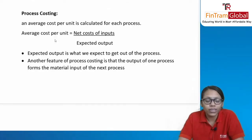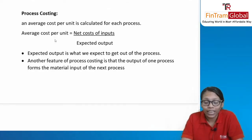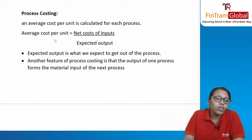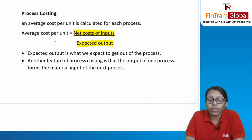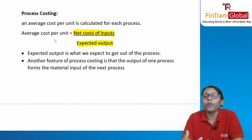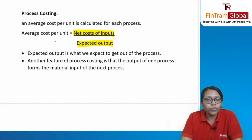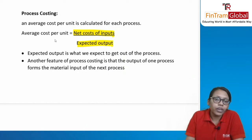Process costing is used when goods produced are homogeneous and pass through the same process. Average cost = net cost of input ÷ expected output. Expected output = input − normal loss. Net cost of input = total cost − scrap value of normal loss.